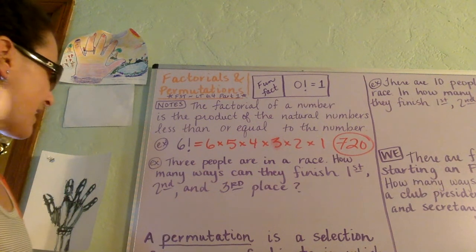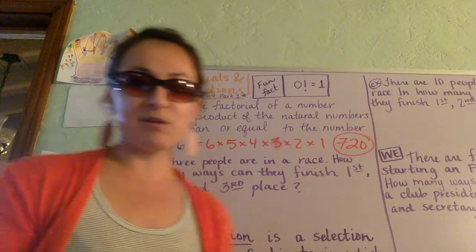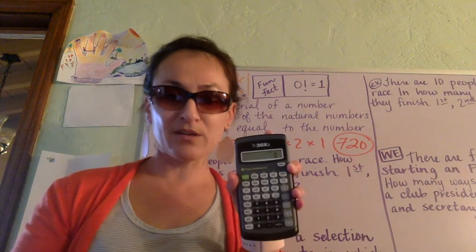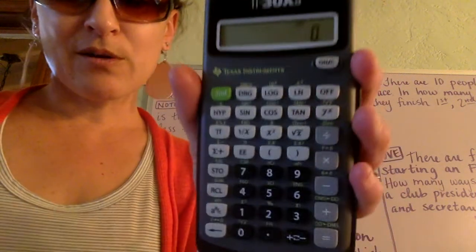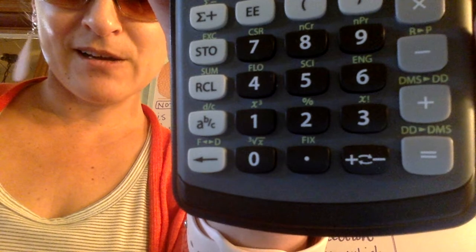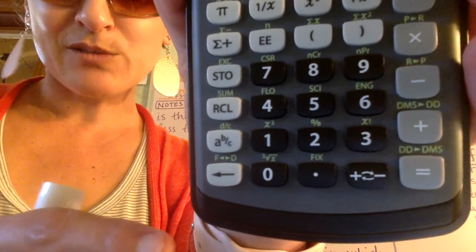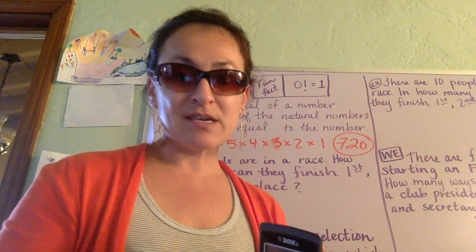As you're thinking about that, it would be really helpful if you could go grab yourself a calculator. You can also grab Desmos. If you're taking a look at my calculator, do you see the 3 button right there? Do you see what's right above it? Do you see how it says X with an exclamation point? That's where my factorial key is.